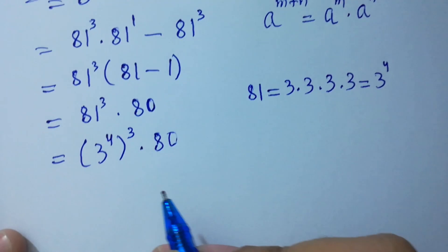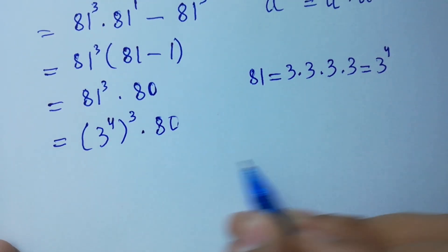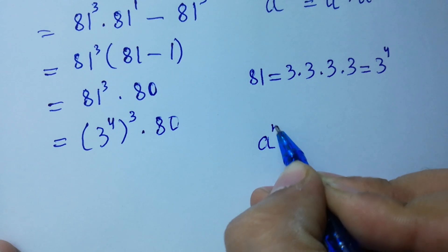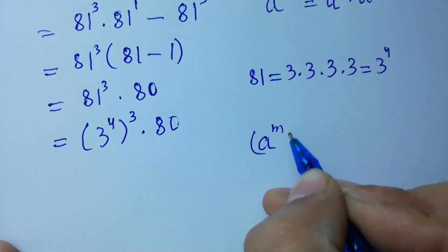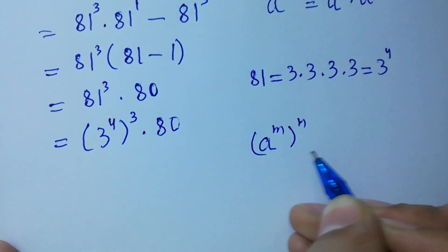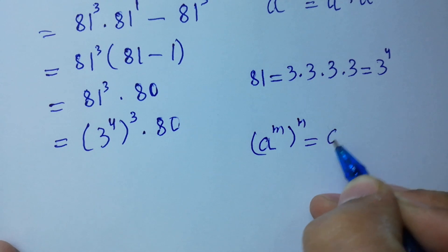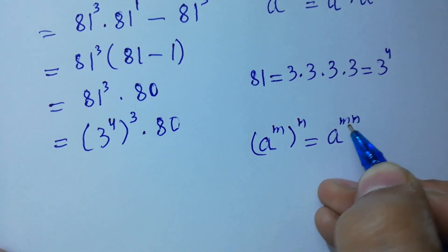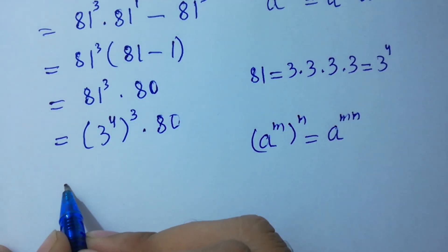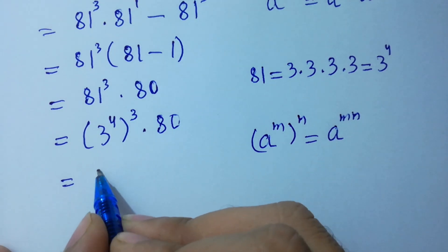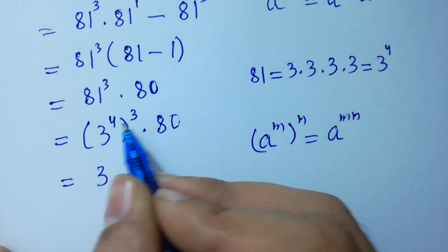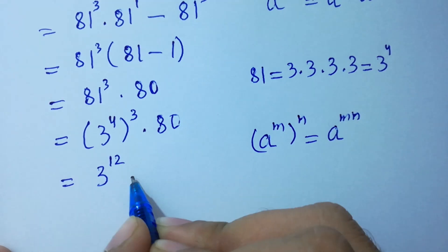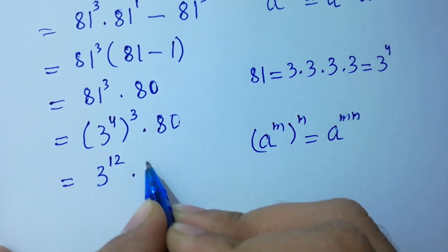Since a to the power m, to the whole power n, equals a to the power m times n, we have 3 to the power 4 times 3, which gives 3 to the power 12, times 80.